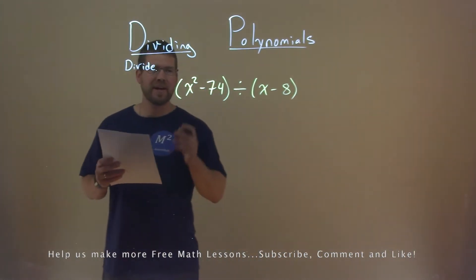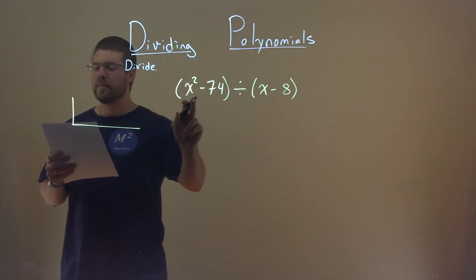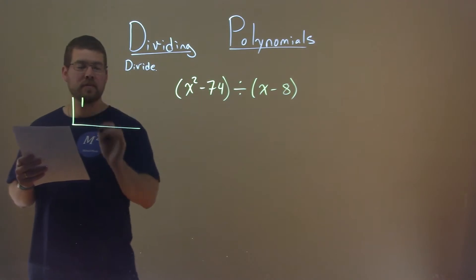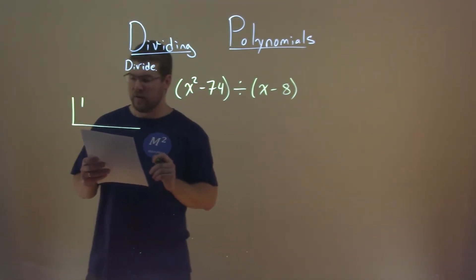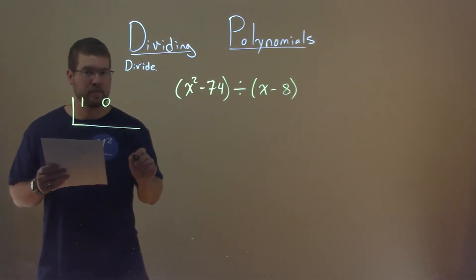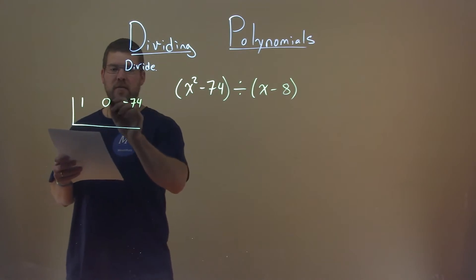Well, let's set up synthetic division here. We look at the first part, what's in front of x squared is a 1, that's its coefficient. We don't have an x value there, so we put a 0 in its place, then we can go to the negative 74. Don't forget that 0 is very important.